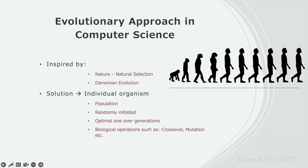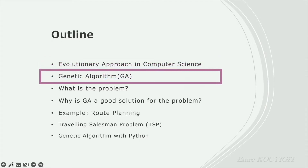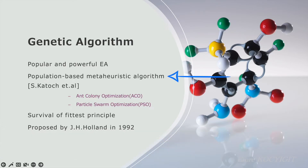It may seem abstract and not clear, but don't worry — after explaining genetic algorithm and especially the Python implementation part, it will be more tangible. In computer science, you can see different evolutionary presentations such as genetic programming, differential evolution algorithm, evolutionary programming, etc. Genetic algorithm is one of the most powerful and successful evolutionary algorithms. We can categorize it as a population-based meta-heuristic algorithm. There are also alternative optimization algorithms such as ant-colony optimization, particle swarm optimization, or artificial bee optimization algorithm.